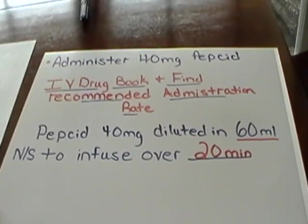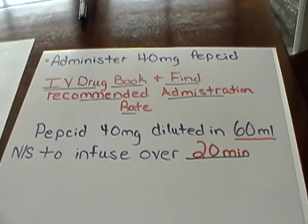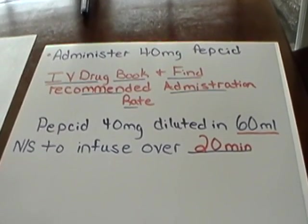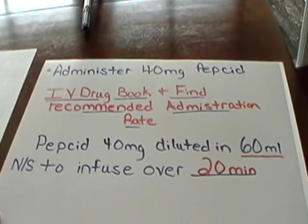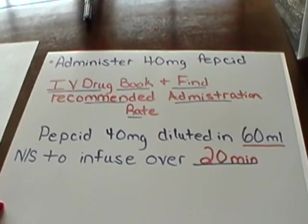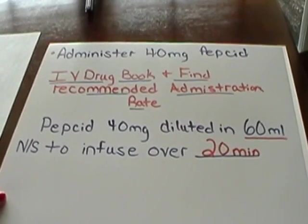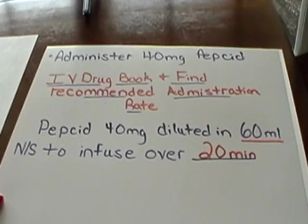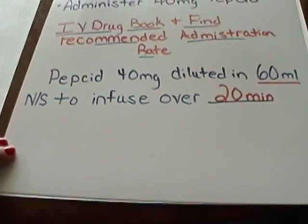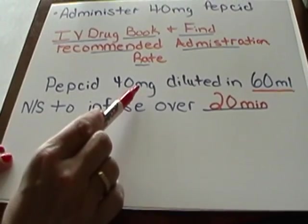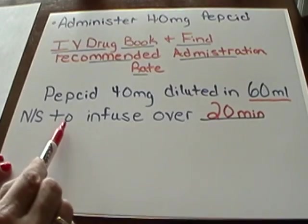We're now going to work another problem for IV administration rate using minutes. We are to infuse 40 milligrams of Pepcid — that is our order. We're going to go to our drug book and find the recommended administration rate and the recommended volume for dilution. Our pharmacist has sent up Pepcid 40 milligrams diluted in 60 milliliters of normal saline.